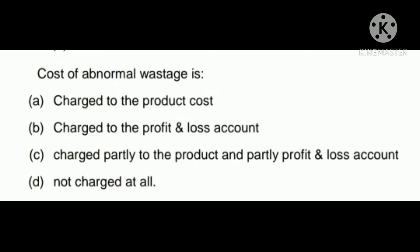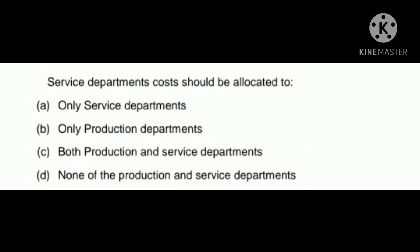Next question: cost of abnormal wastage is — A) charged to product cost, B) charged to profit and loss account, C) charged partly to product and partly to P&L, D) not charged at all. The correct answer is B: cost of abnormal wastage is always charged to the profit and loss account.